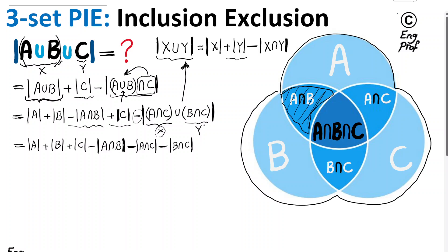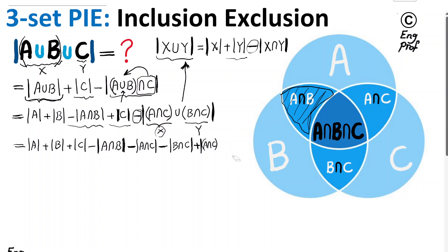Finally, there is a minus sign in front of the entire expression, and the last term from 2-set PIE is minus cardinality of X intersect Y. With the negative sign behind, negative times negative becomes positive, so we get plus cardinality of (A intersect C) intersect (B intersect C). Cleaning up, that intersection becomes A intersect B intersect C.